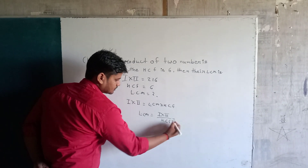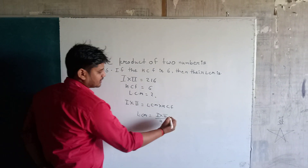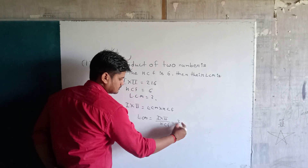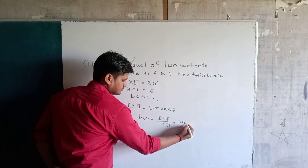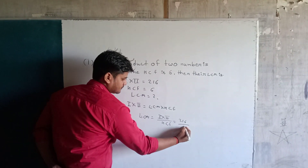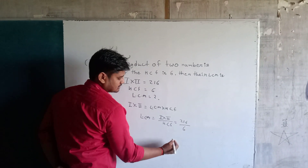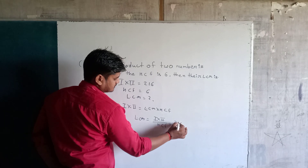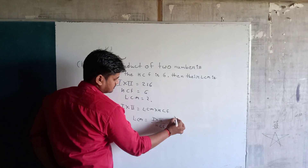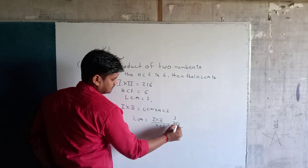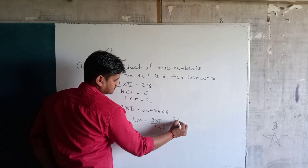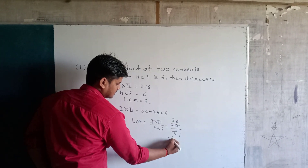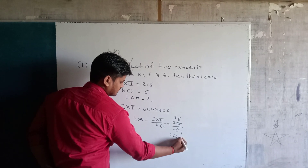So LCM equals 216 divided by 6, which gives 36. The answer is 36.